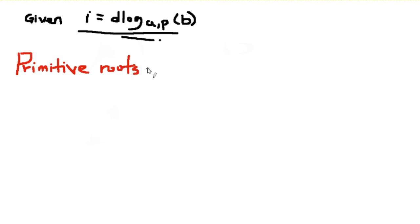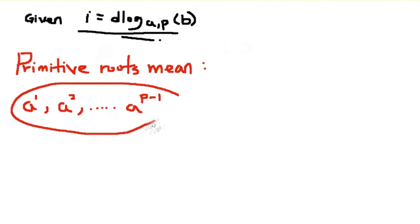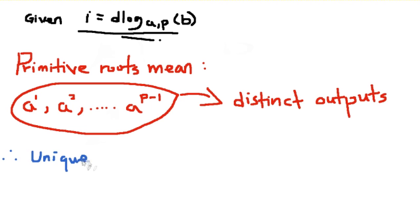So given this formula, I believe you are familiar with this because my friend has presented to you. So we can see that primitive roots, they actually mean no matter what power it gives. For example here, a power to 1, a power to 2, up to a power p minus 1. If they produce distinct outputs or values we can conclude that it is the unique exponent and also a is actually the primitive root of prime p.